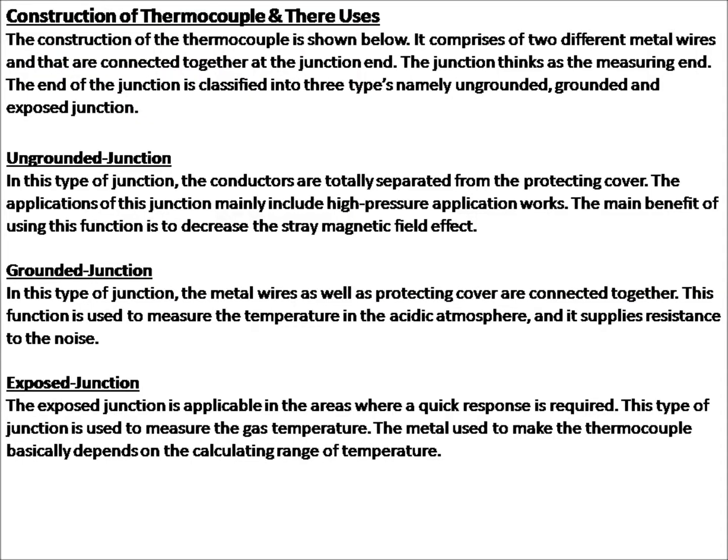The construction of the thermocouple comprises two different metal wires connected together at the junction end — the junction being the measuring end. The end of the junction is classified into three types: ungrounded, grounded, and exposed junction.